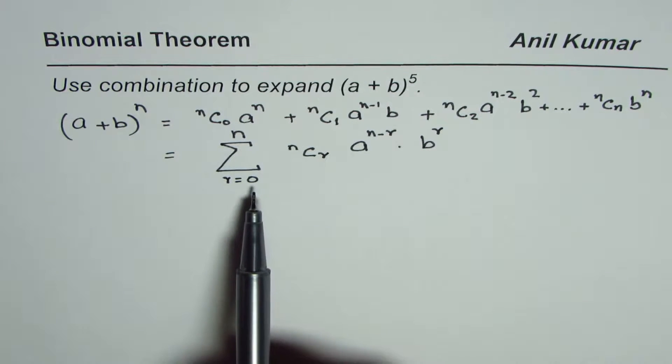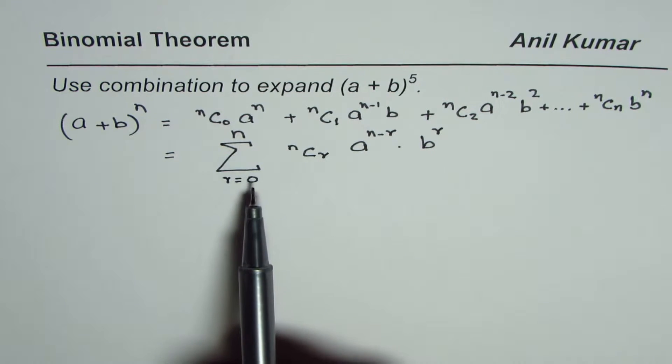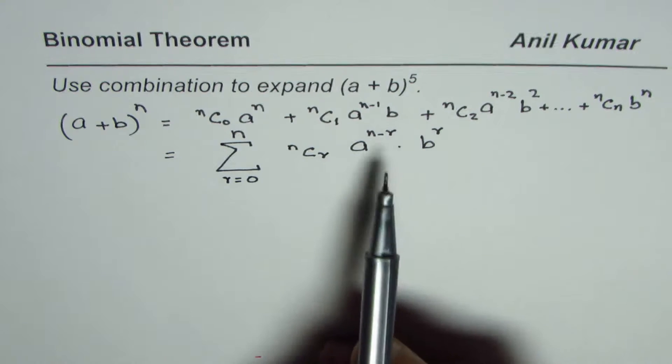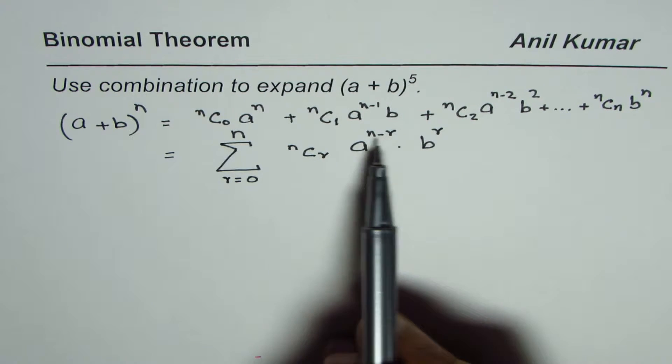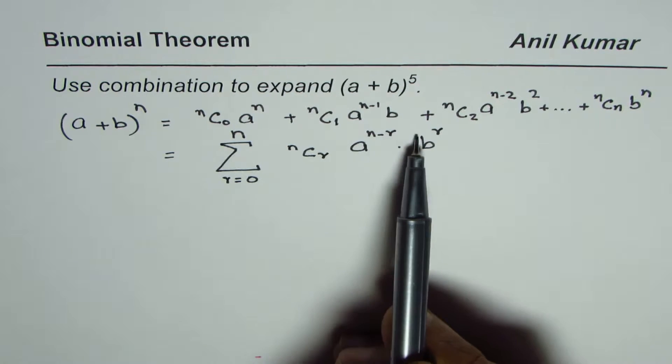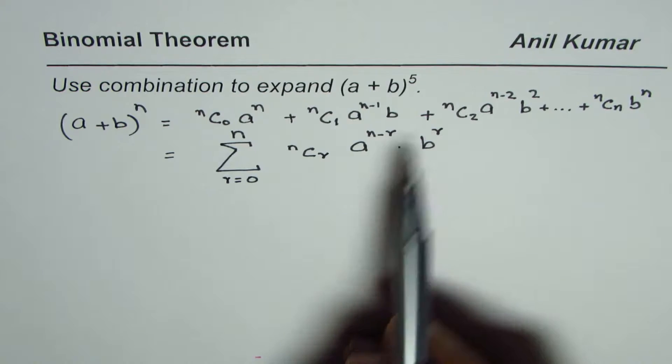The number of terms will be from 0 to n, that means n plus 1. Always when you add them — n minus r plus r — it will be n. Correct.